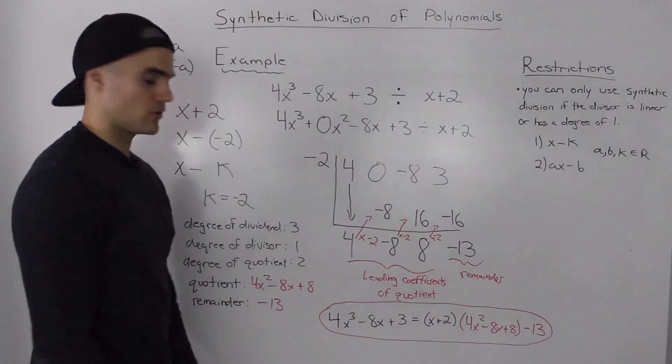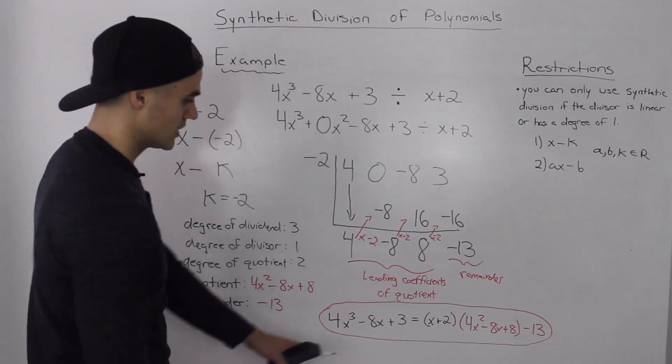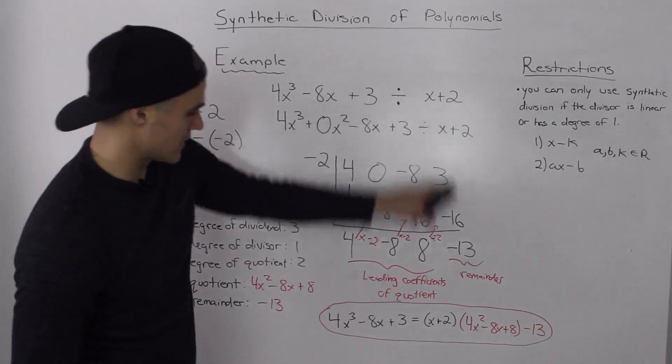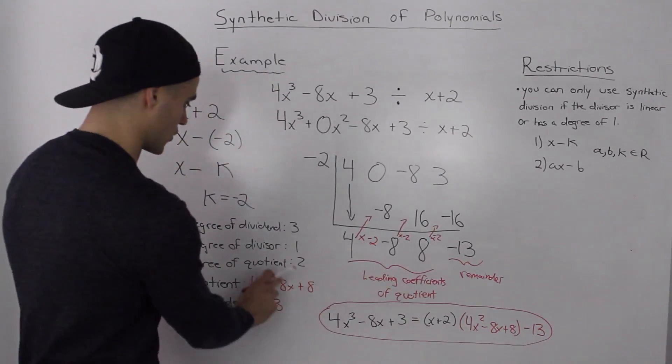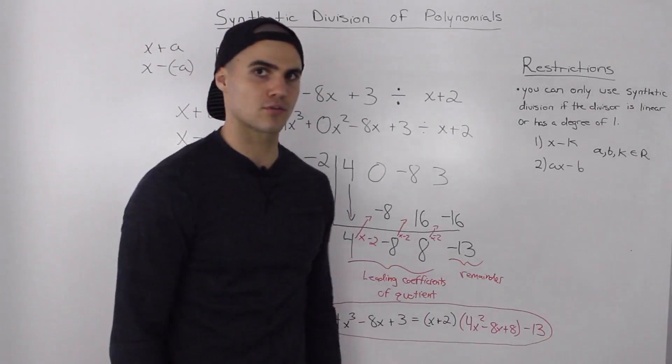And then writing this example in a division statement, we got our dividend of 4x³ minus 8x plus 3 is equal to our divisor of x plus 2 times our quotient of 4x² minus 8x plus 8 minus our remainder 13.